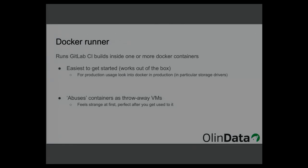The Docker runner basically abuses Docker containers as throwaway VMs, which feels a bit awkward at first but is actually quite nice once you get used to it — it just works. I do a lot of operations work and use GitLab CI for testing Puppet code. The thing with Puppet code is that it actually makes changes to a system, so you want throwaway environments where you start with the same baseline every time.